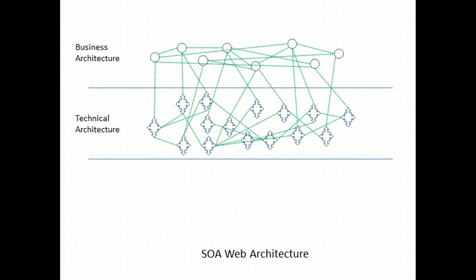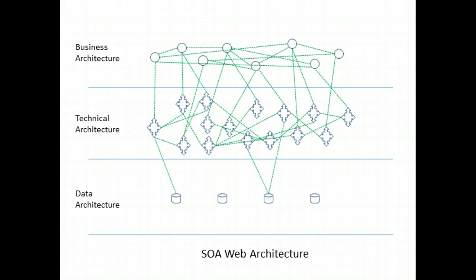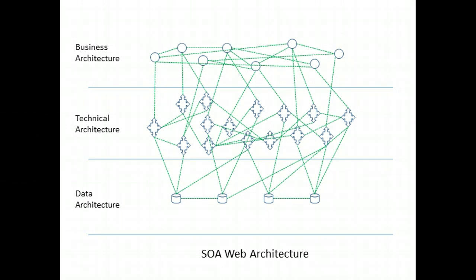Once we understand the technical architecture, we can map this to the data architecture. Our goal here is to understand which services update which data on which data stores. The end result of this is what I am calling an SOA web architecture. I call it a web architecture not because this architecture runs on the web — it may or it may not — but because the most appropriate visual metaphor is a spider's web with lots of connection points between the various nodes.